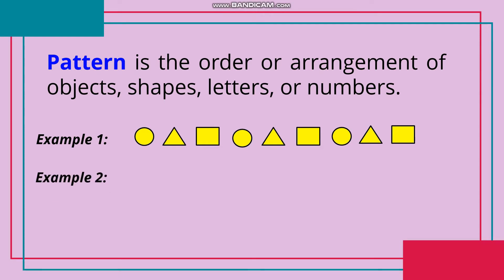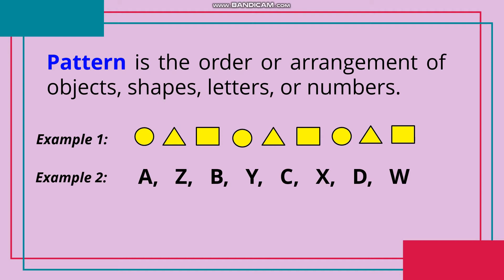Example 2: A, Z, B, Y, C, X, D, W. Kung mapapansin natin at titignan natin alternate, ang A, B, C, at D ay nakaayos ng alphabetical order. At ang Z, Y, X, and W ay nakaayos ng patras.